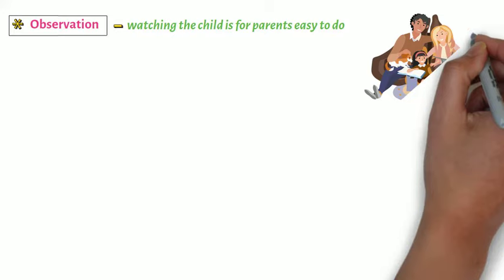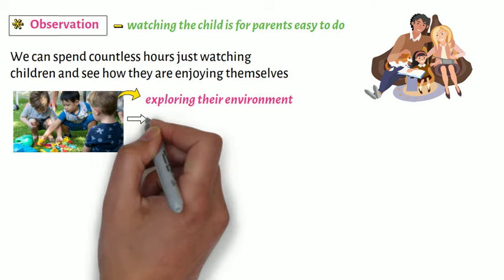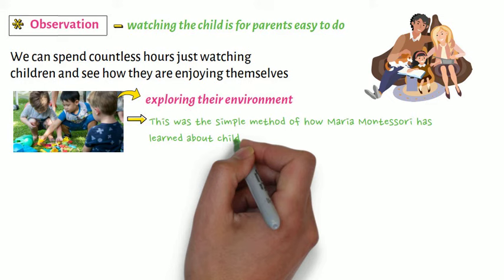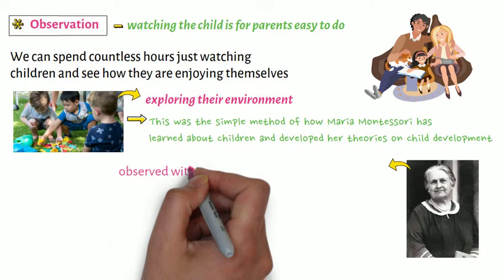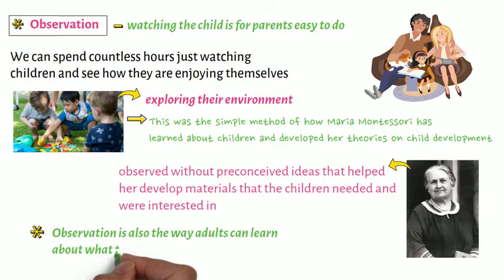On observation. Observation, or watching the child, is for parents easy to do. We can spend countless hours just watching children and see how they are enjoying themselves, exploring their environment. This was the simple method of how Maria Montessori learned about children and developed her theories on child development. She observed without preconceived ideas, which helped her develop materials that the children needed and were interested in.